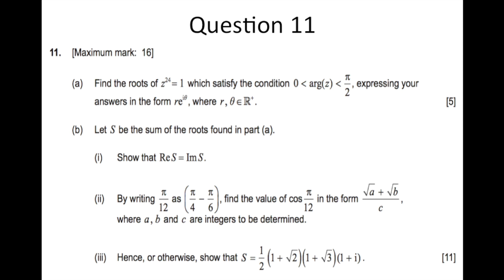The first part asks us to find the roots of z to the power of 24 equal to 1, which satisfy the condition that the argument of z is greater than zero but less than or equal to π over 2, expressing answers in the form r·e^(iθ) where r and θ are elements of positive real numbers.